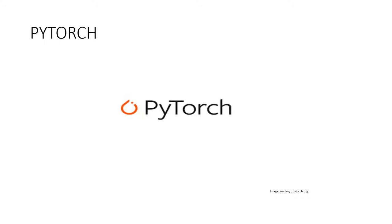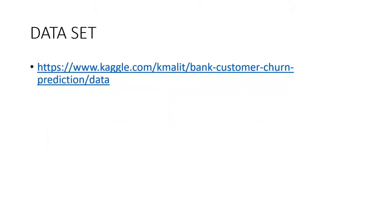Before we proceed, it is assumed that you have intermediate-level proficiency with Python and have installed the PyTorch library, along with basic machine learning concepts. You can install the PyTorch library using Anaconda or from the command prompt using pip install. I have used a conda install since I am using Anaconda. If you are using Python, you can use pip install pytorch. You can download the dataset from the provided link.